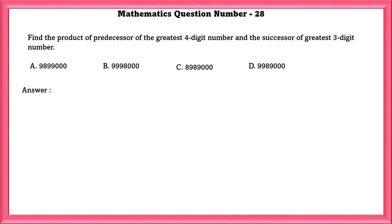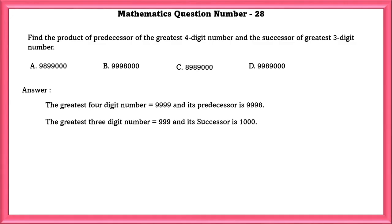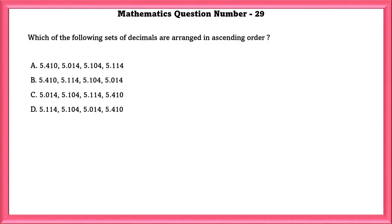Mathematics Question Number 28. Find the product of predecessor of the greatest 4-digit number and the successor of greatest 3-digit number. The greatest 4-digit number is 9,999 and its predecessor is 9,998. The greatest 3-digit number is 999 and its successor is 1,000. The product of two numbers is 99,98,000.